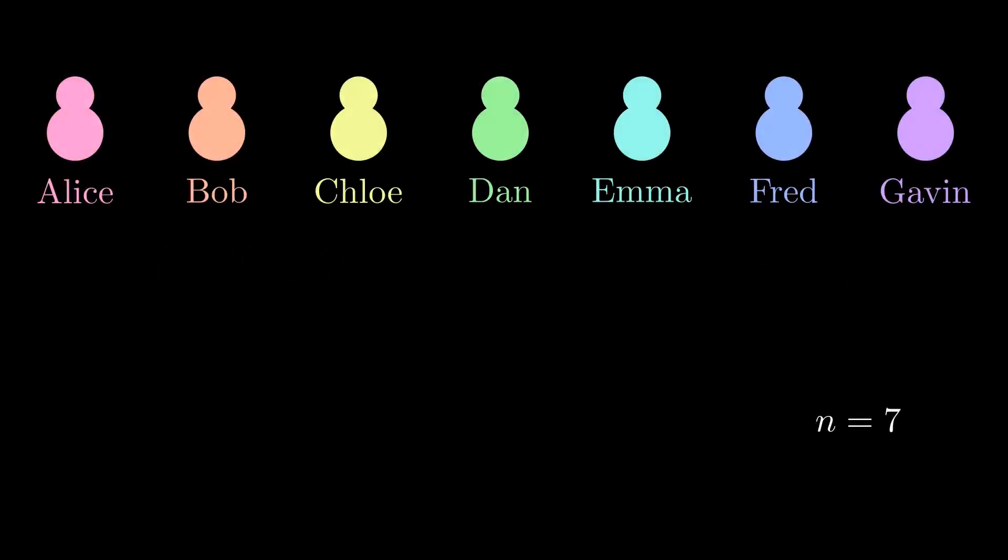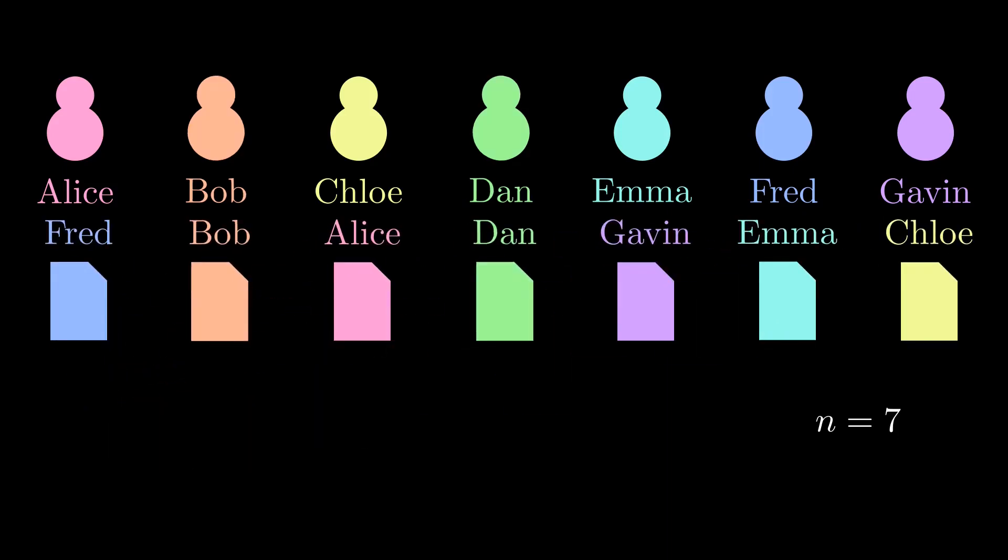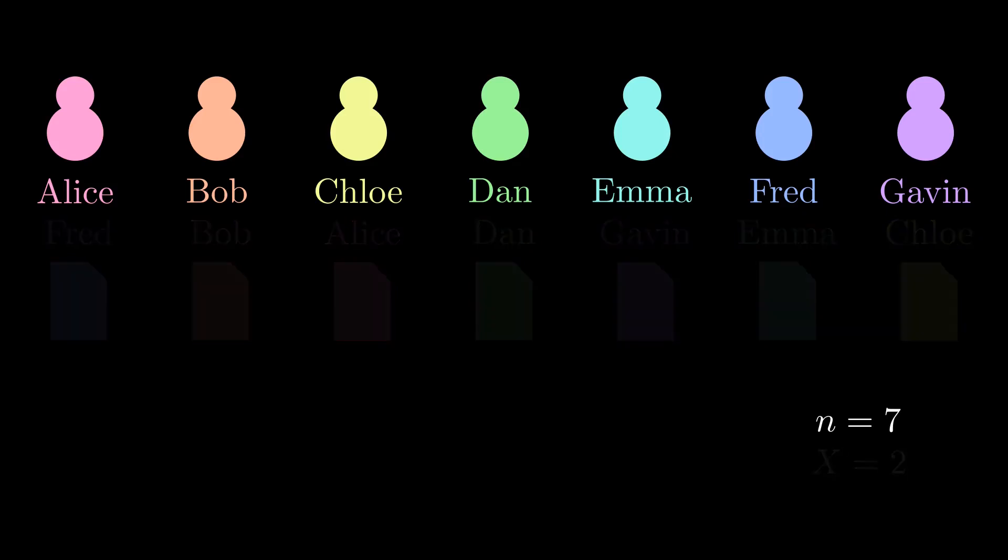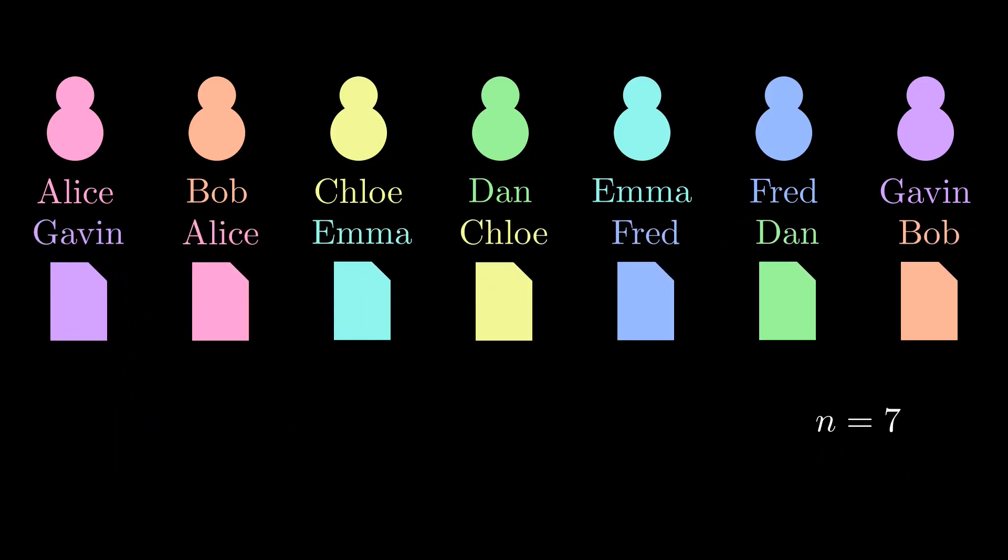Recall our setup. We had n students and returned their homework randomly. Everywhere, capital X is the number of students who get their own homework back. Our question was about the expected number of students to get their own homework back, and we used a tool called derangements, permutations with no fixed points.